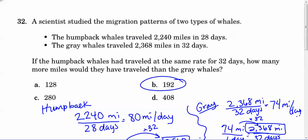32, a scientist studied the migration patterns of two types of whales. We have the humpback whale who travels 2,240 miles in 28 days. And the gray whale that traveled 2,368 miles in 32 days. So if the humpback whale had traveled at the same rate for 32 days, how many more miles would they have traveled than the gray whale? So essentially what we're doing is we're finding how many miles each whale can travel in a day first. That's our first step. What's their rate? What's their speed? And then we're going to scale it up to 32 days so that they're traveling the same amount of time. And then we're going to find the distance and subtract how far one is from the other essentially. So it's kind of three steps.